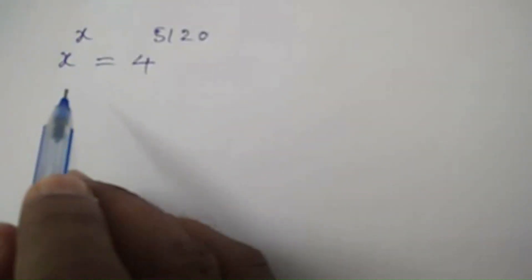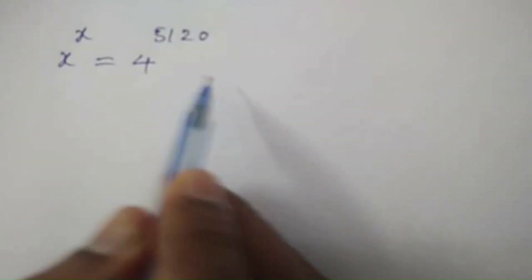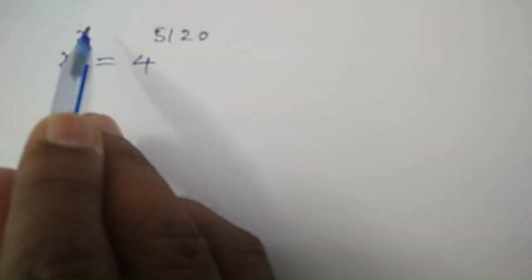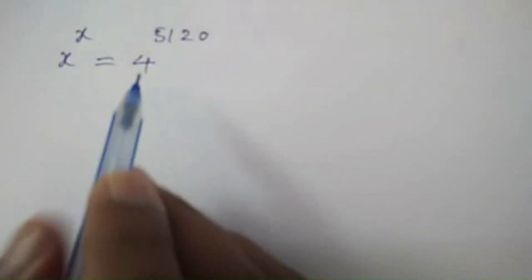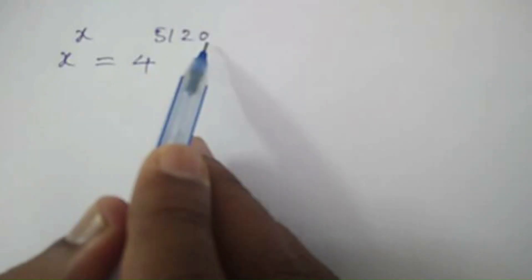Hello everyone. Here we need to find the value of x in the equation x to the power of x is equal to 4 to the power of 5120.